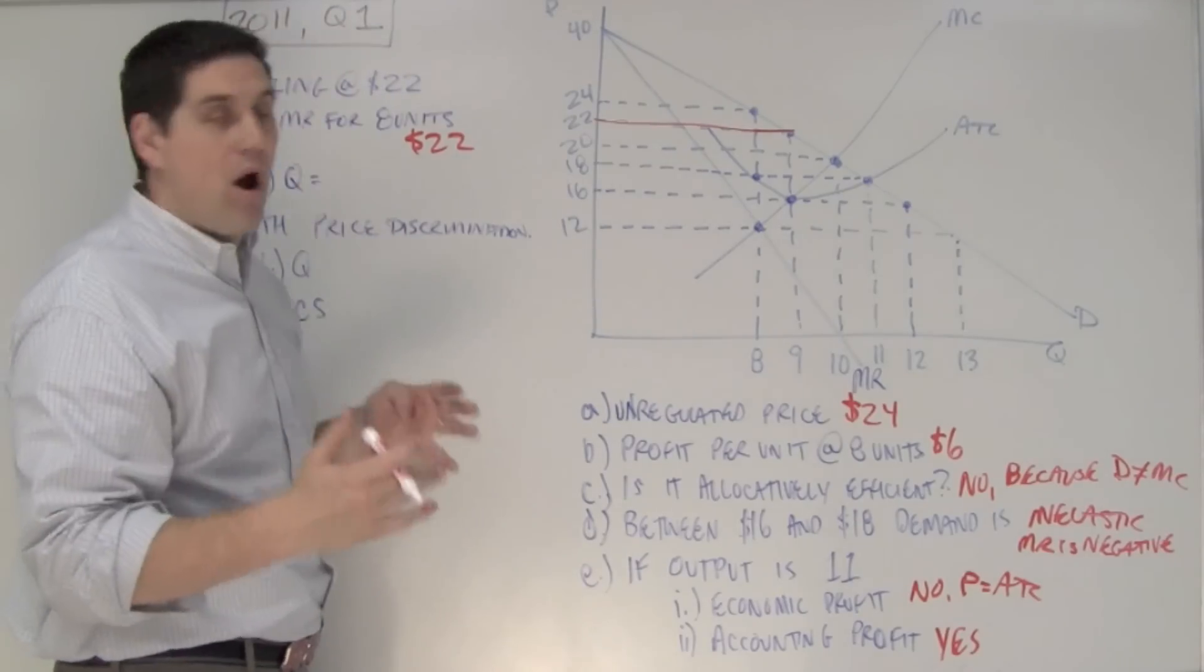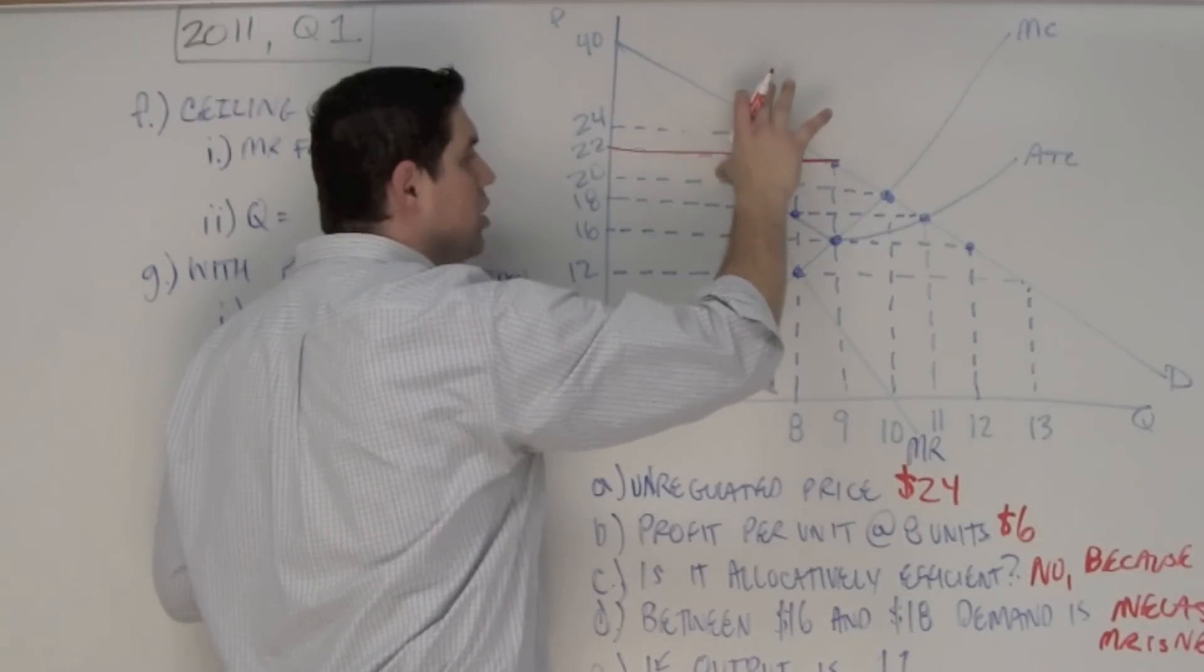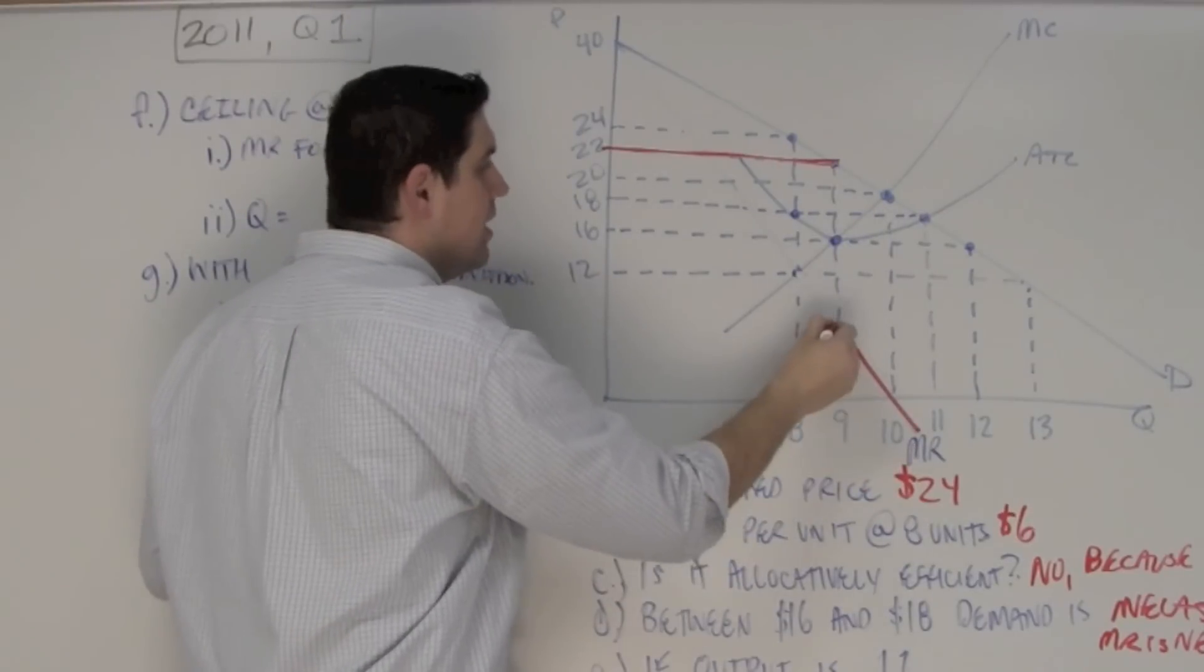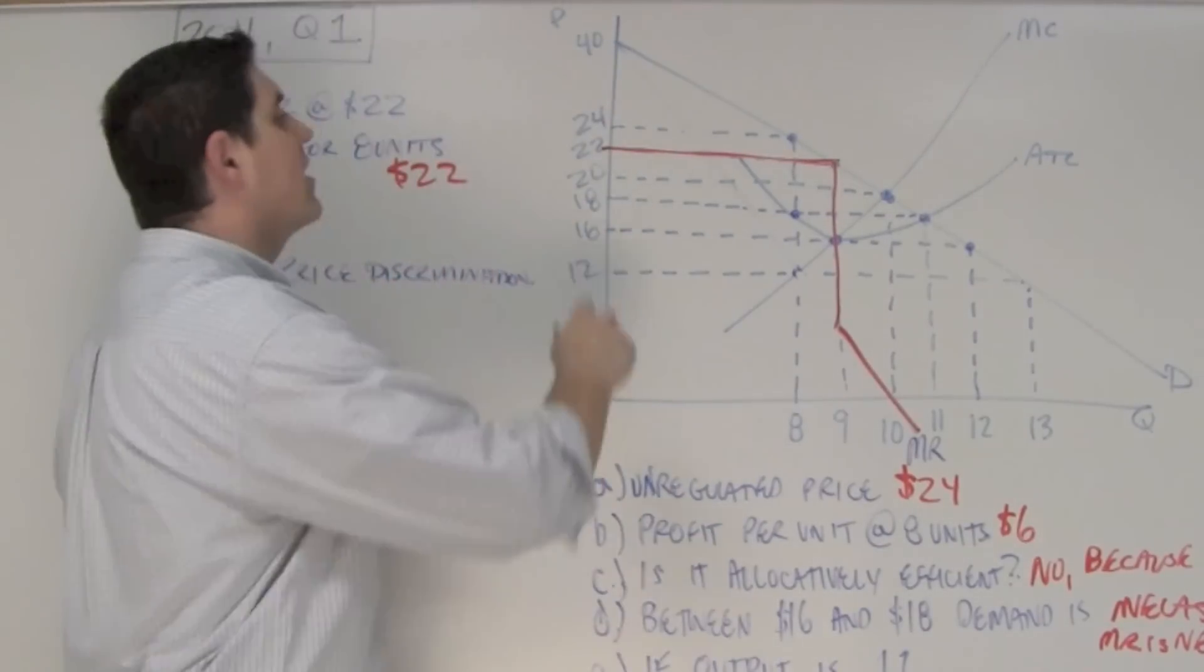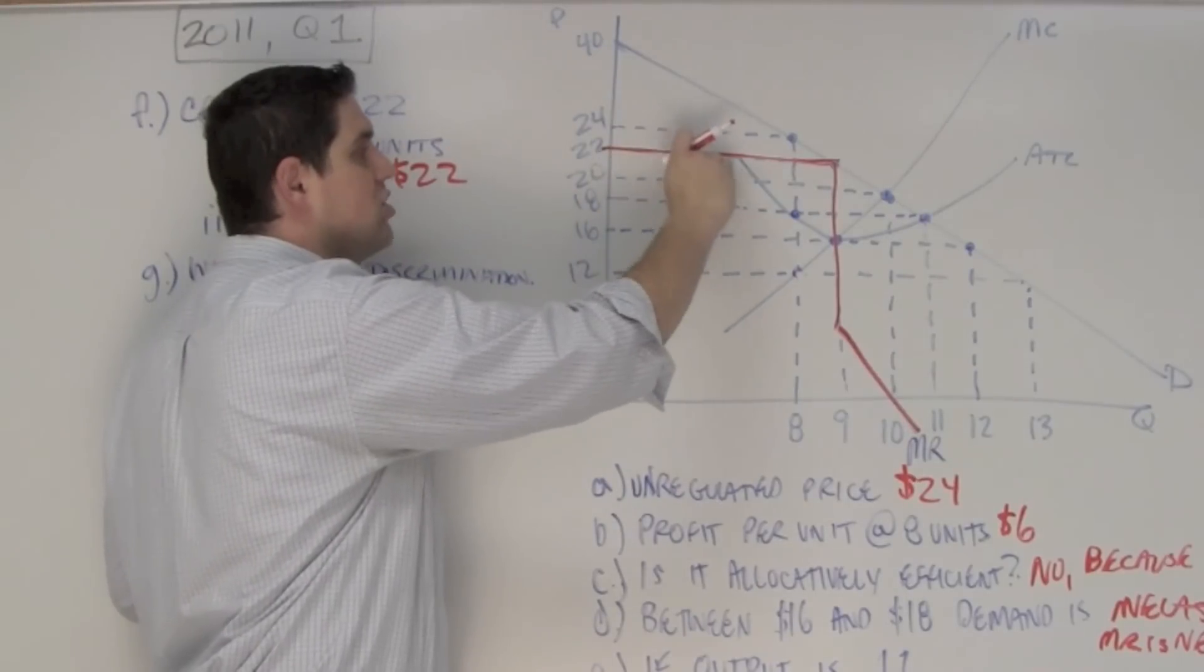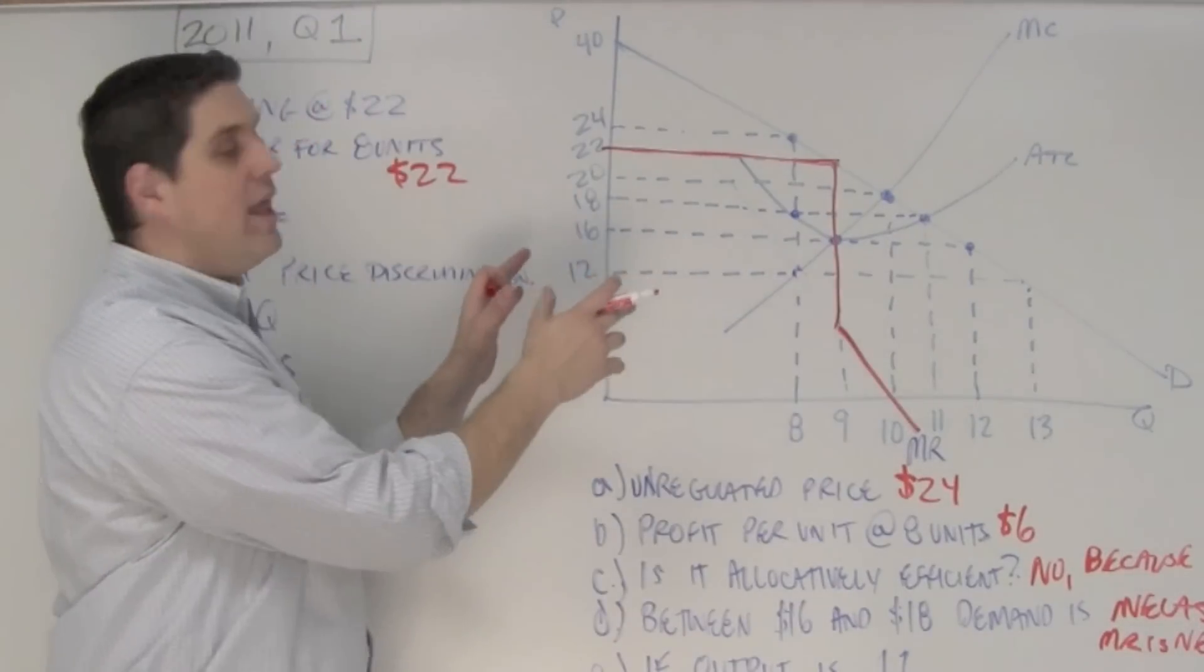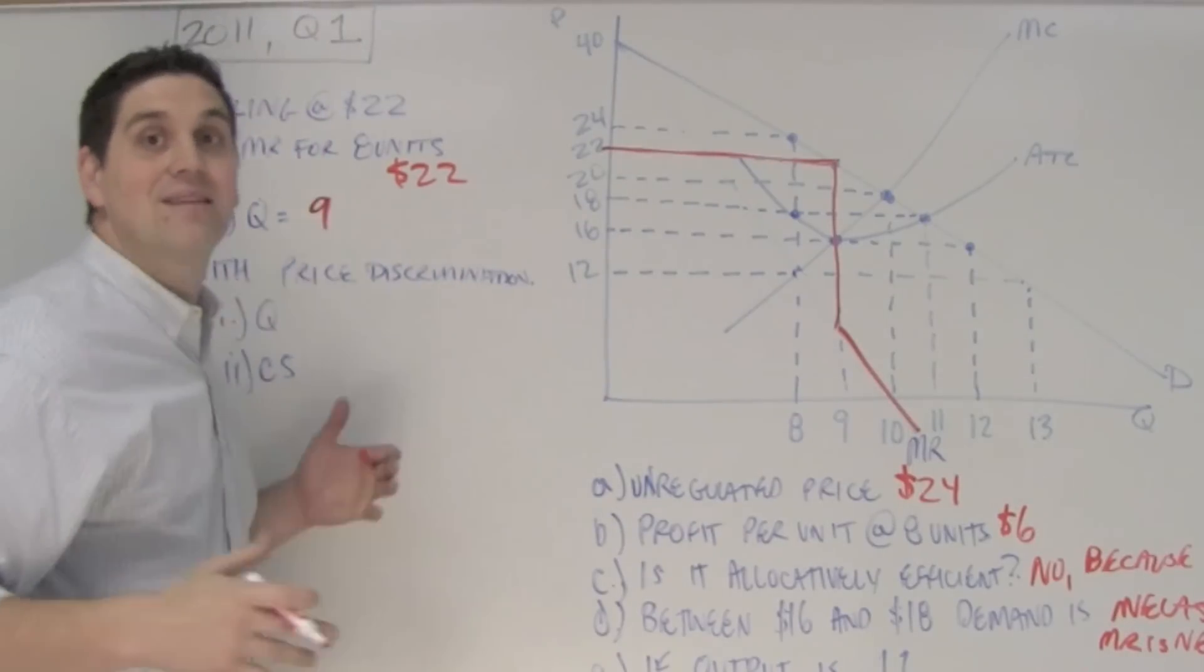Now, what quantity are they going to produce? Where MR hits MC. So, in this situation, this MR kind of disappears. It doesn't look like this anymore at all. The MR is now horizontal and then it continues on below here. And so, that is technically the marginal revenue. Now, don't freak out. It makes sense. If the government says they can't increase the price beyond $22, then that's the price that they're going to be charging, which equals the marginal revenue. At this point, they can start lowering the price so the marginal revenue continues on as it would before. Now, with this regulation, what's the quantity they're going to produce? Well, they produce where MR equals MC, which is quantity 9. That's the output.